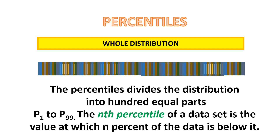The percentiles go from P1 to P99. P1 is 1% of the distribution. P2 is 2% of the distribution — or of the data that is below it. P13 is 13%, P55 is 55%, and P78 is 78% of the data.